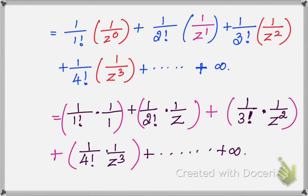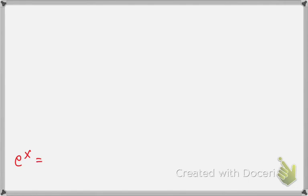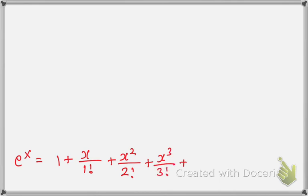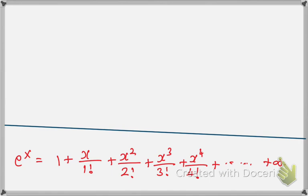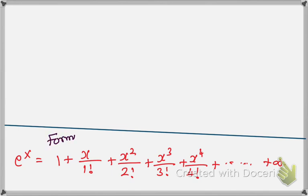Now we are trying to arrange this in formula format. We have 1 over 1 factorial, 1 over 2 factorial, 1 over 3 factorial, 1 over 4 factorial. We are comparing with the known formula. The formula we need is: e to the power of x equals 1 plus x over 1 factorial plus x^2 over 2 factorial plus x^3 over 3 factorial plus x^4 over 4 factorial, plus etc. up to infinity. This is the formula for e to the power x in factorial form, and you have to memorize it.